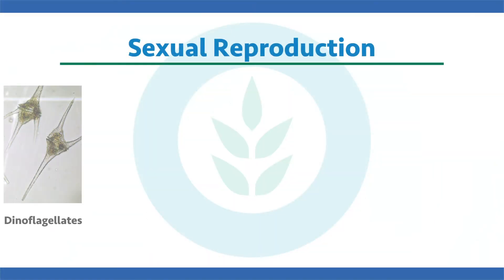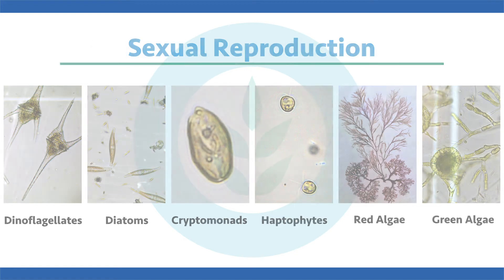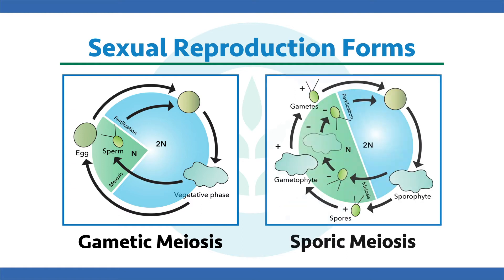Common algal groups that sexually reproduce include the dinoflagellates, diatoms, cryptomonads, haptophytes, red algae, and green algae including streptophytes. Different forms of sexual reproduction include gametic meiosis and sporic meiosis, which basically alters whether the sporophyte or gametophyte stage is haploid or diploid, and whether the gametes produced are haploid or diploid and how they come together — very complex overall.